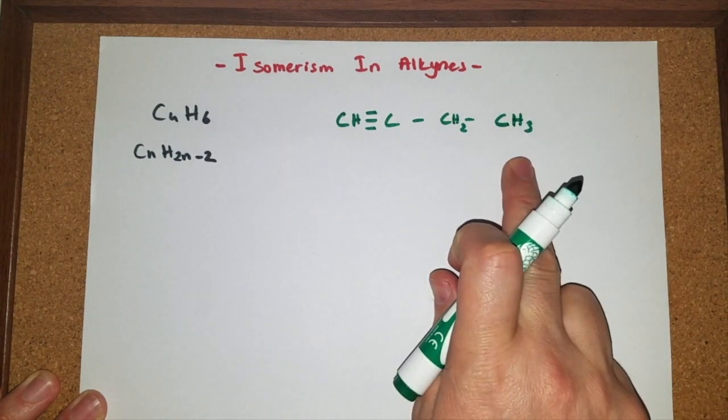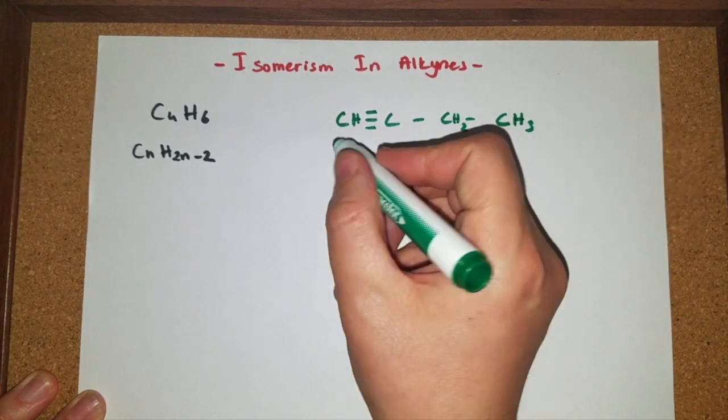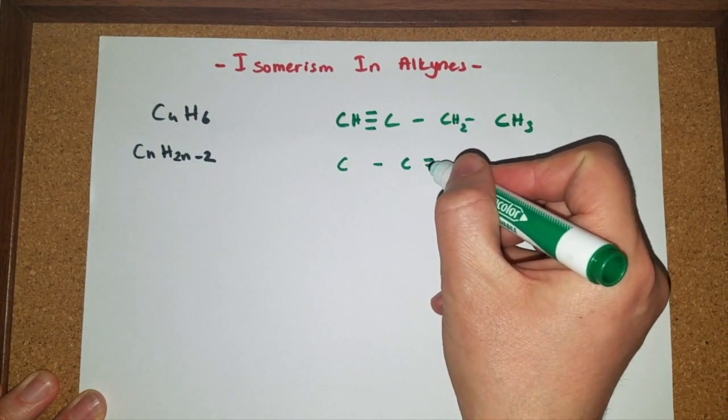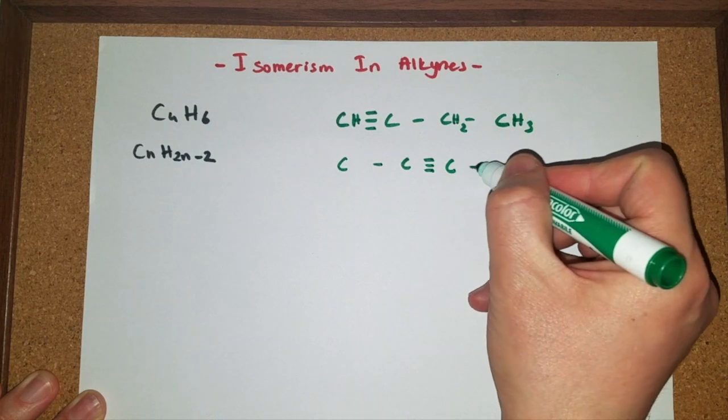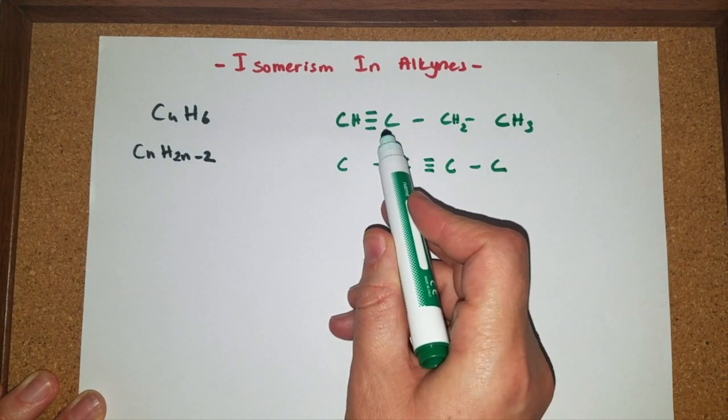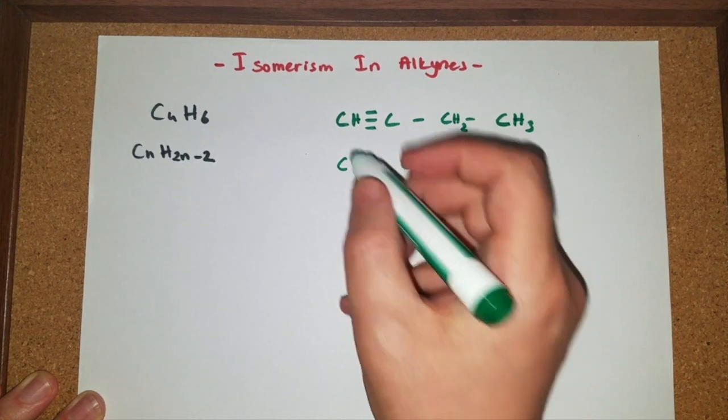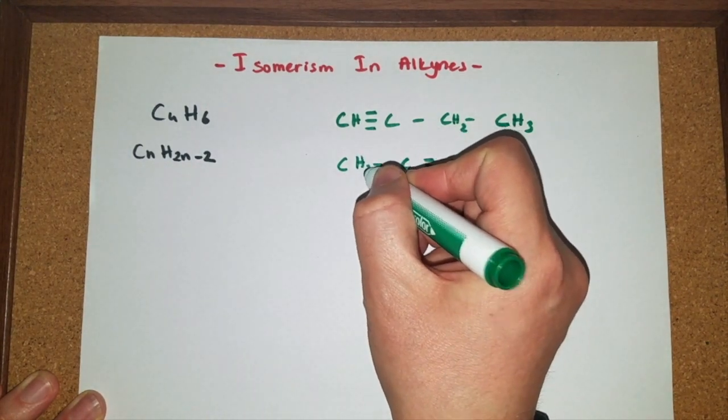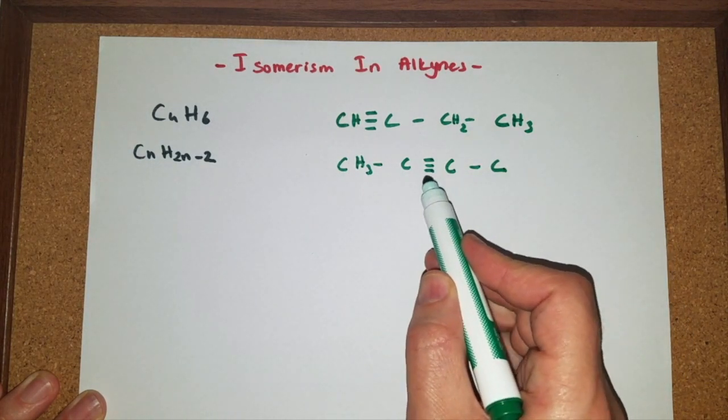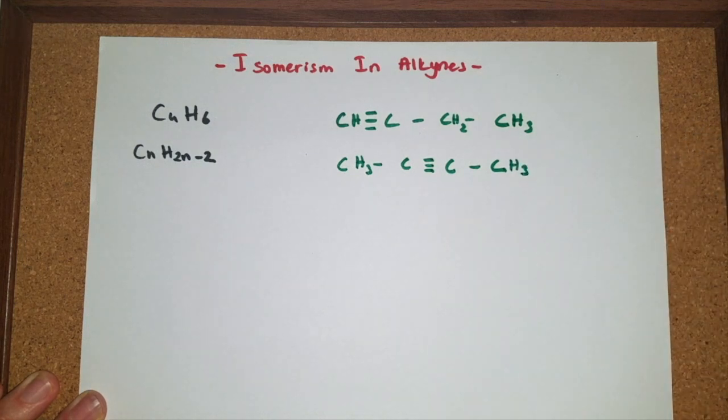An isomer for this compound can be made by changing the location of the triple bond. In the previous compound, the triple bond was between first and second carbons. Here it is between second and third. Now let's add the hydrogens. CH3. This is already full for bonds. This is already full for bonds. And this needs three more hydrogens.